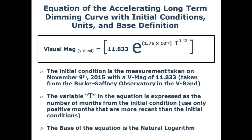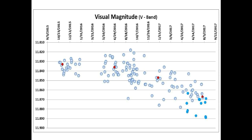Now for the fun part — extrapolation and prediction time. On Reddit we have been accused of extrapolating too much and too far into the future, but it's kind of like buying a brand new sports car and never seeing what it can do — just keeping it in the garage. After spending all that time and effort perfecting this equation, we are going to commit this heinous crime of extrapolation again. Filling in the calculated values across this scatter plot, we get the best fit calculated curve of the accelerating long-term dimming of Tabby Star.